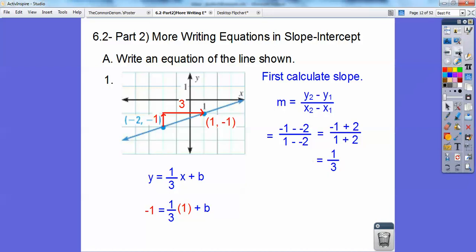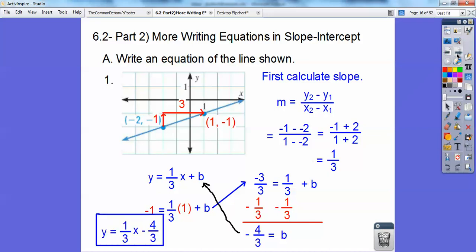Now I'm going to change that negative 1 to negative 3 thirds, so when I subtract 1 third, I have common denominators, because this is just negative 1. Negative 3 over 3, that's just this negative 1 right here. So now I'm going to subtract off the 1 third on both sides, and negative 3 minus 1 is negative 4, so it's negative 4 thirds. That goes back up into where the b goes, so y equals 1 third x minus 4 thirds.